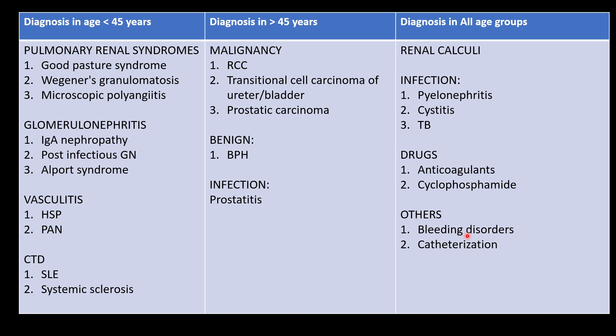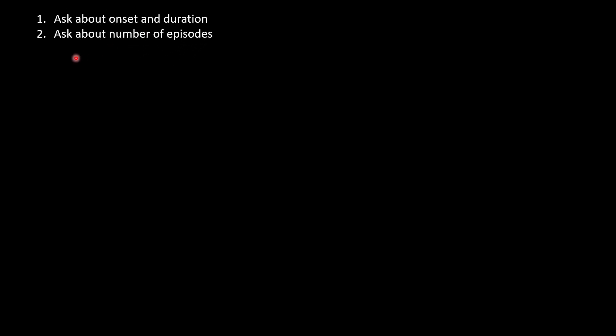We will ask about the onset and duration — for how long the patient has had hematuria, when it started, and how it is progressing. Then we ask about the number of episodes: does it occur once a day or every time the patient urinates?